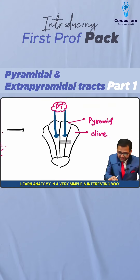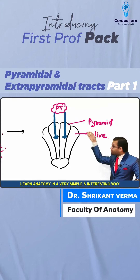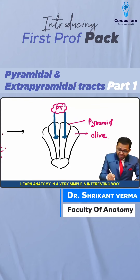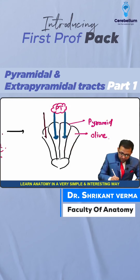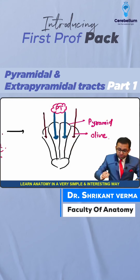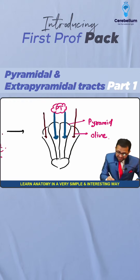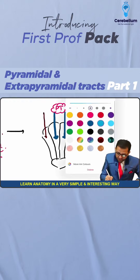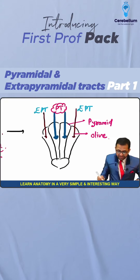Pyramidal tracts are the tracts which are passing through the pyramid. There are many other tracts which are not passing through the pyramid but are passing through outside the pyramid, so these are simply known as extra-pyramidal tracts.